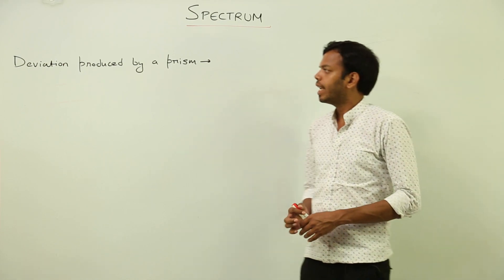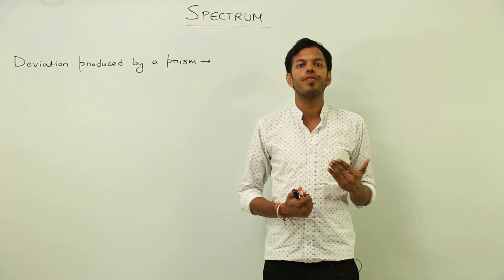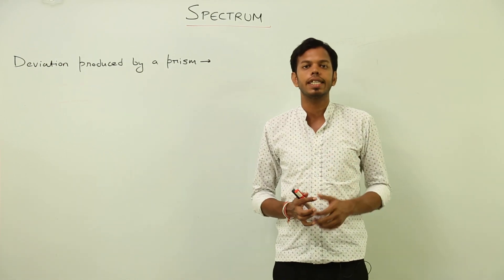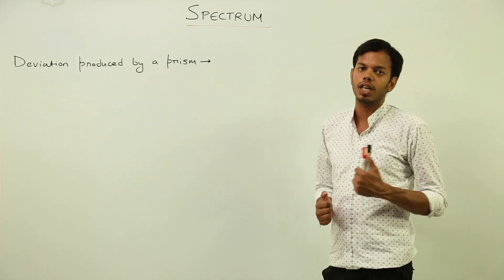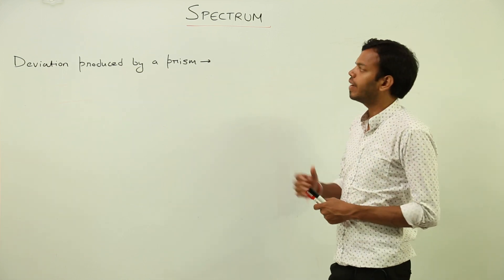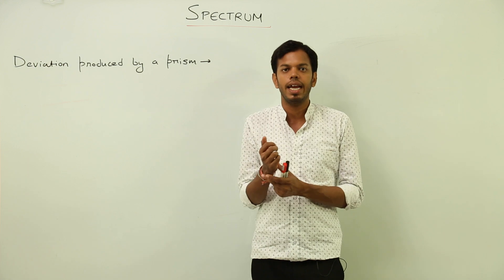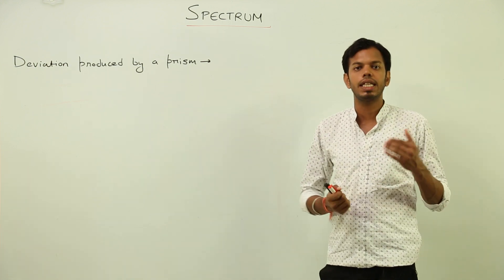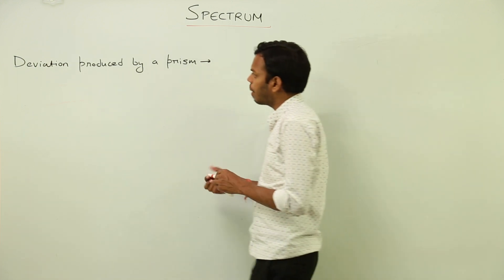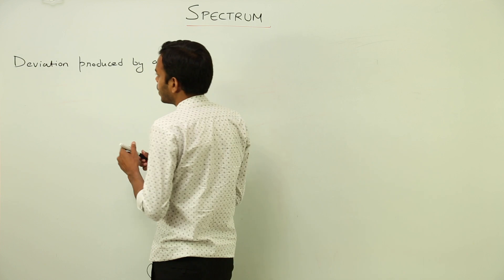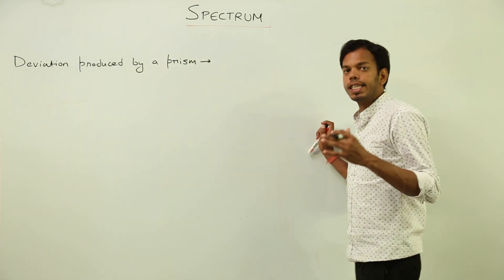Hello students. We have already studied about how refraction occurs in prisms. Now today we are going to study a new topic — we are starting the new chapter on spectrum, beginning with the topic: deviation produced by a prism. So what do we mean by deviation?